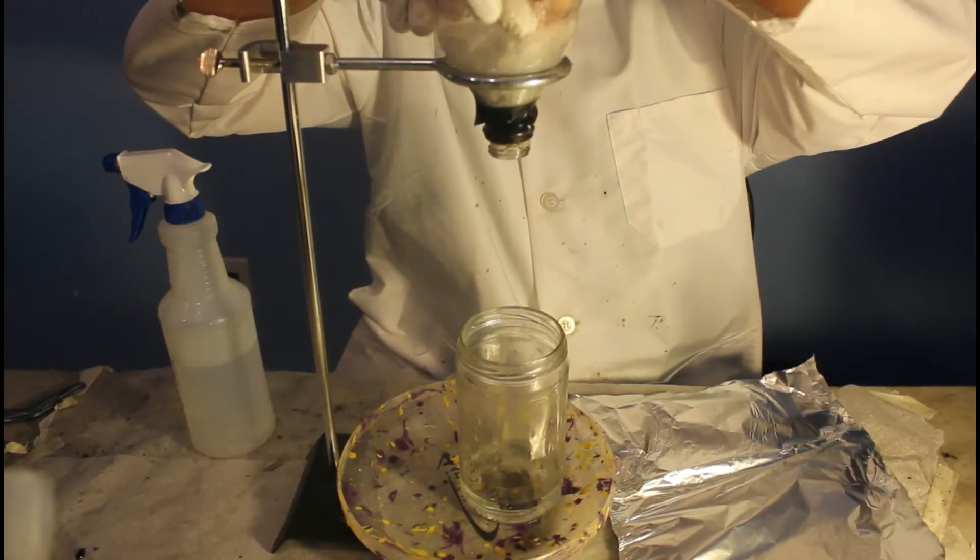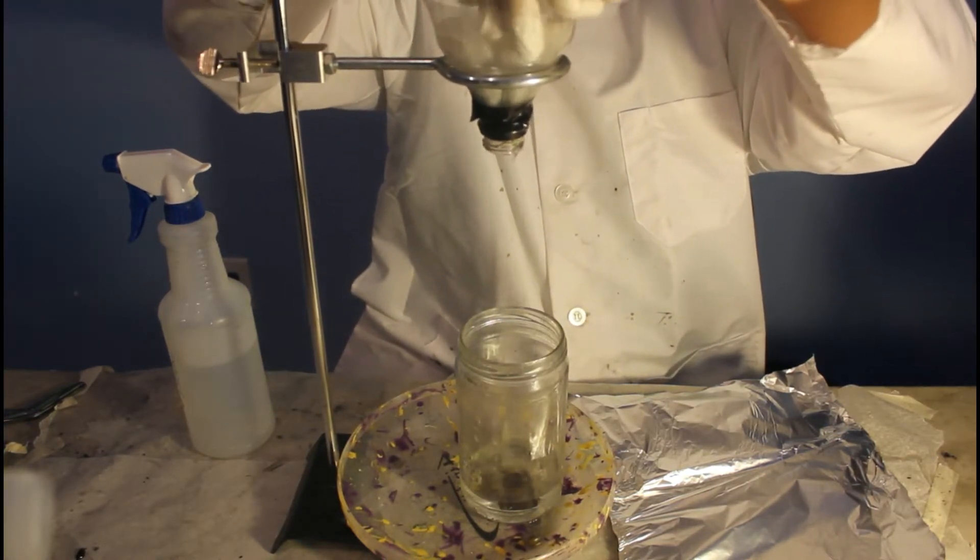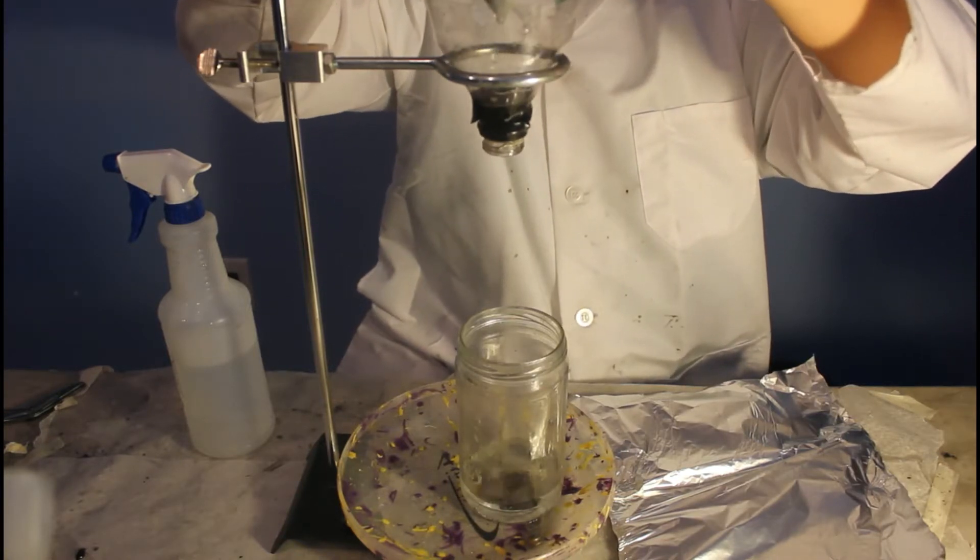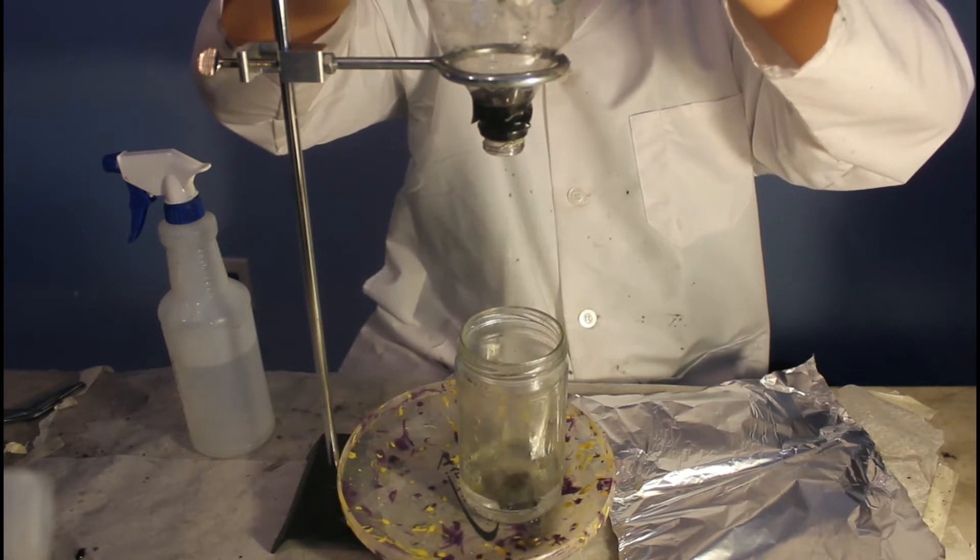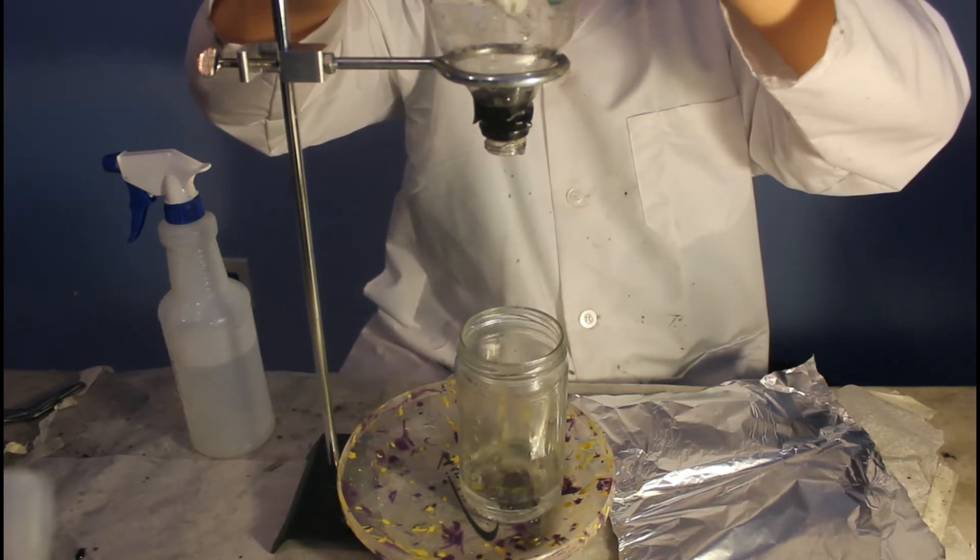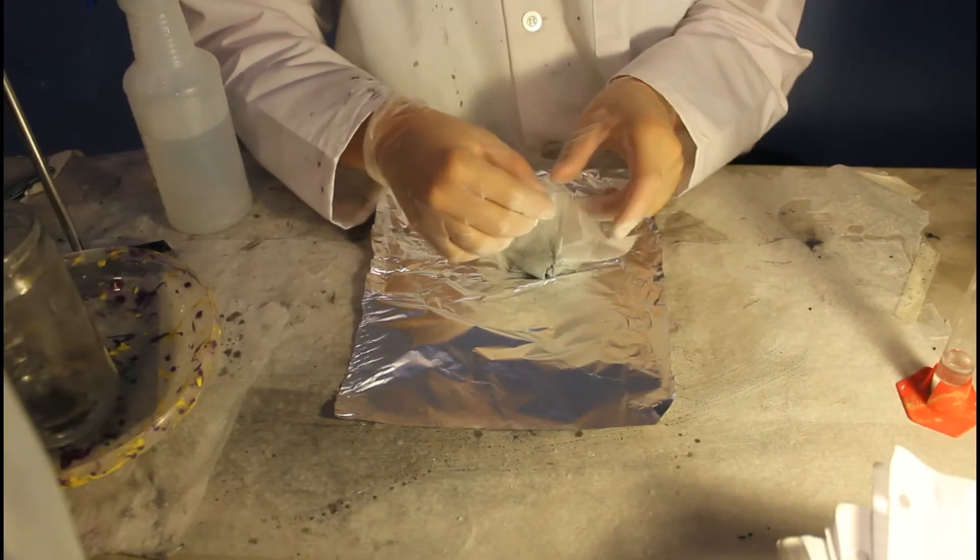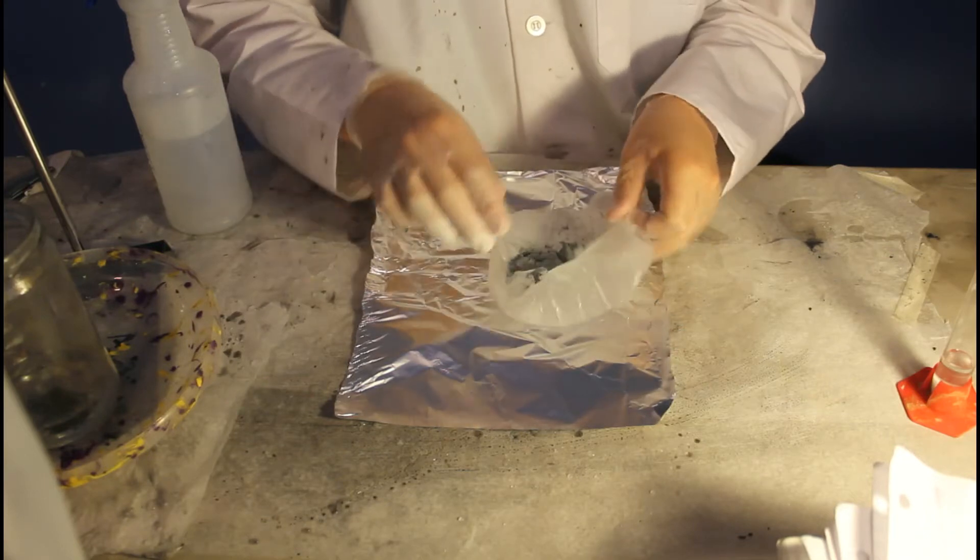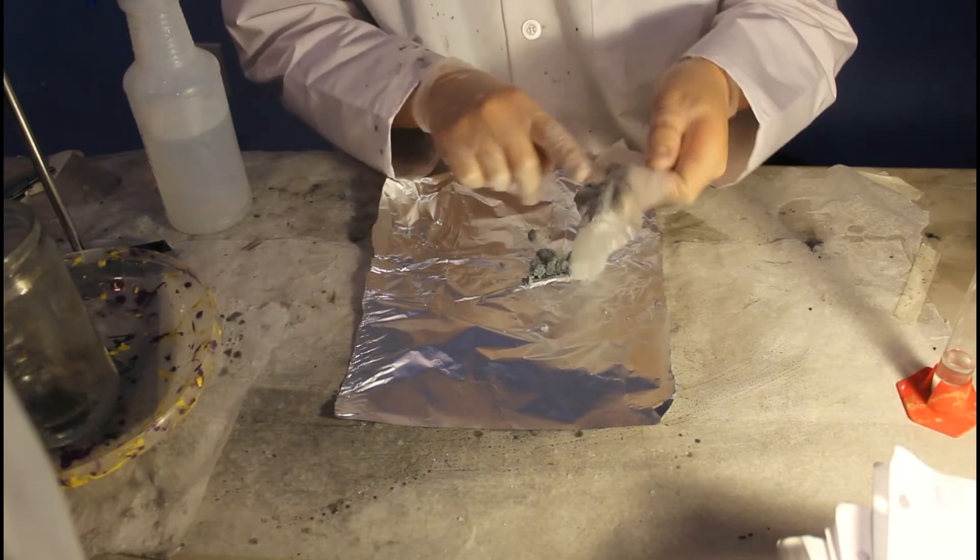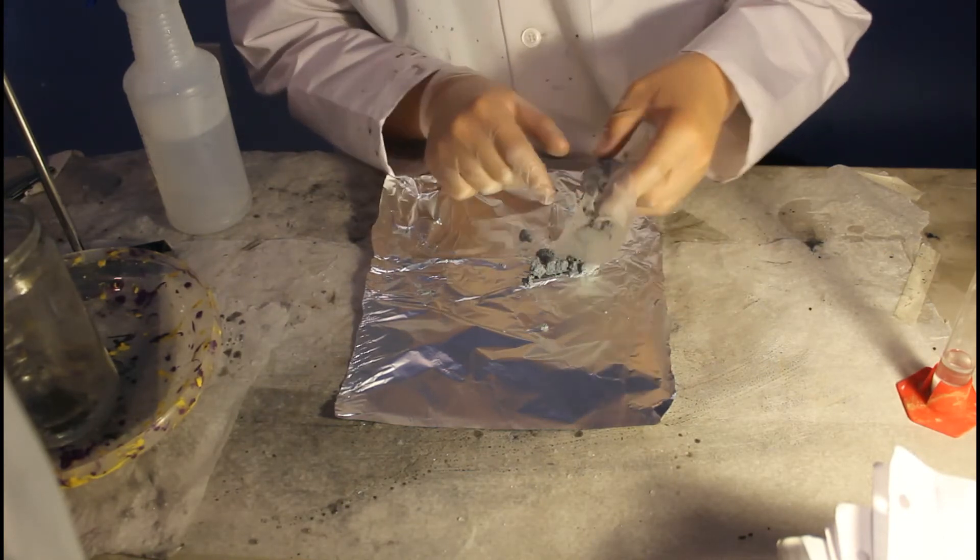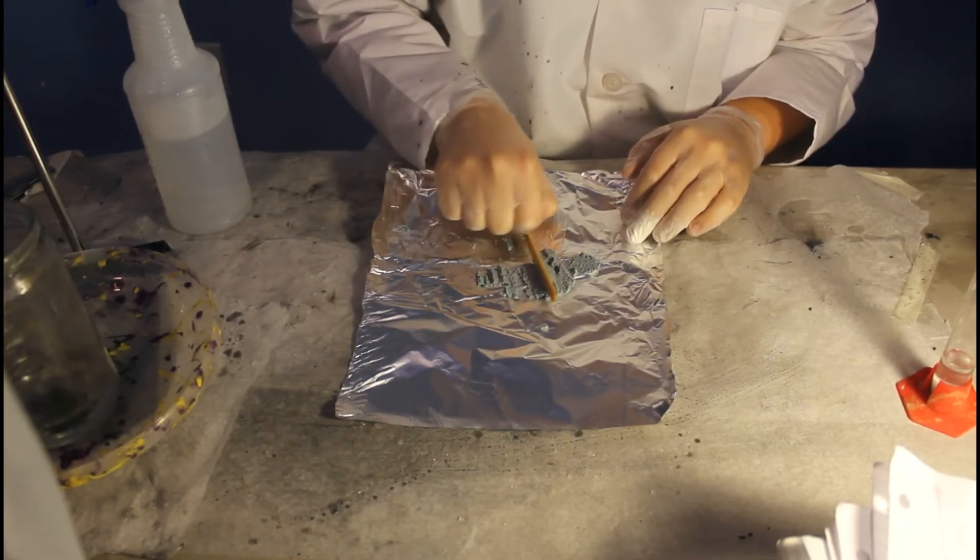After all of the water has passed through the filter, the filter paper is removed. The powder is squeezed to remove as much of the remaining water as possible and it is set out to dry on a piece of aluminum foil. As much zinc as possible is removed from the filter paper and transferred to the foil. The zinc is spread as thinly as possible on foil with a wooden stir rod. This will help it dry faster.